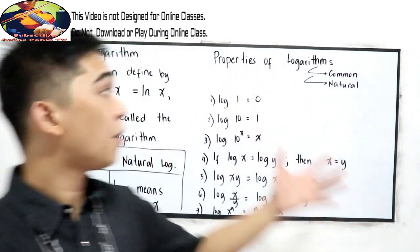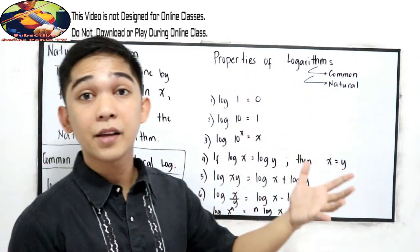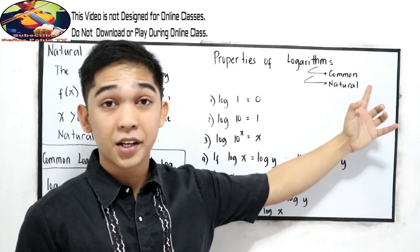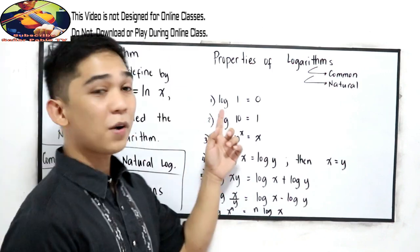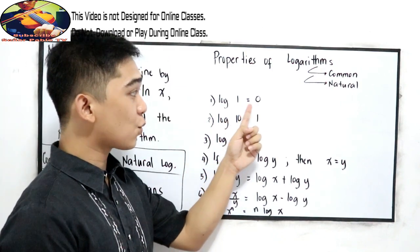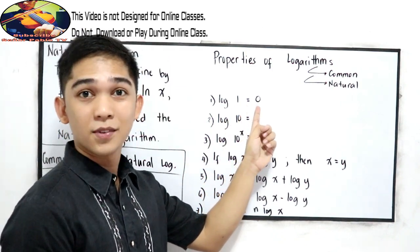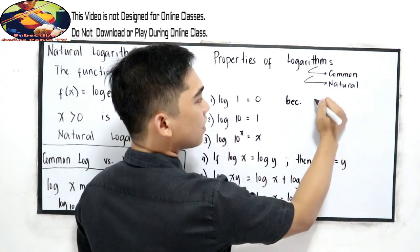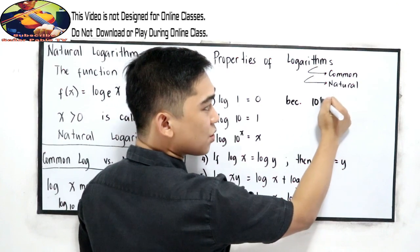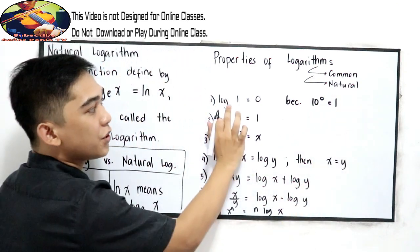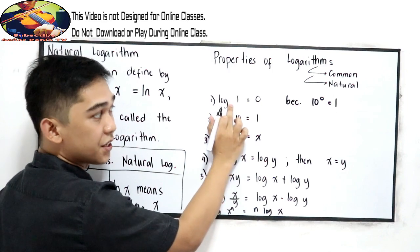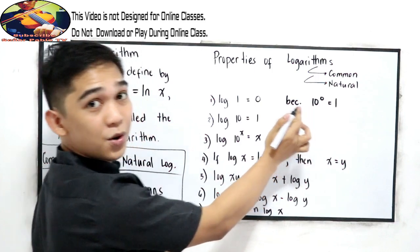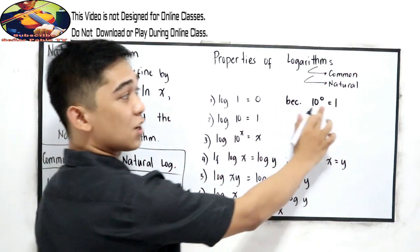We also have the properties of logarithms, which apply to both natural and common logarithms equally. Number 1: log 1 is equal to 0, because 10 raised to 0 is equal to 1. We know the base is 10, and the exponent is 0 — any number raised to 0, except 0 itself, equals 1.